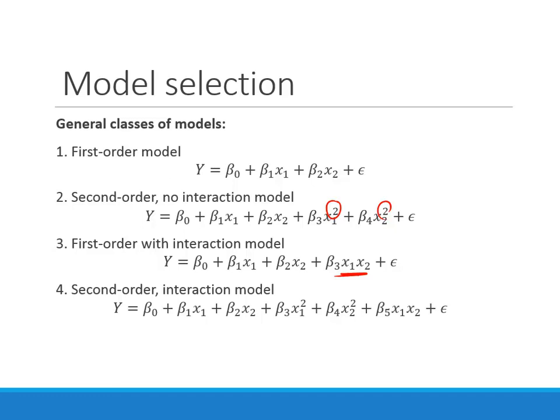A student asked: do these deviate from being linear at all? Technically yes — if you use squared predictors, the function is a quadratic. However, we still call it a linear model because the parameters are still additive: something plus something plus something. We're not multiplying the whole thing together. So even though you have quadratic terms, we still call this a linear model for that reason.